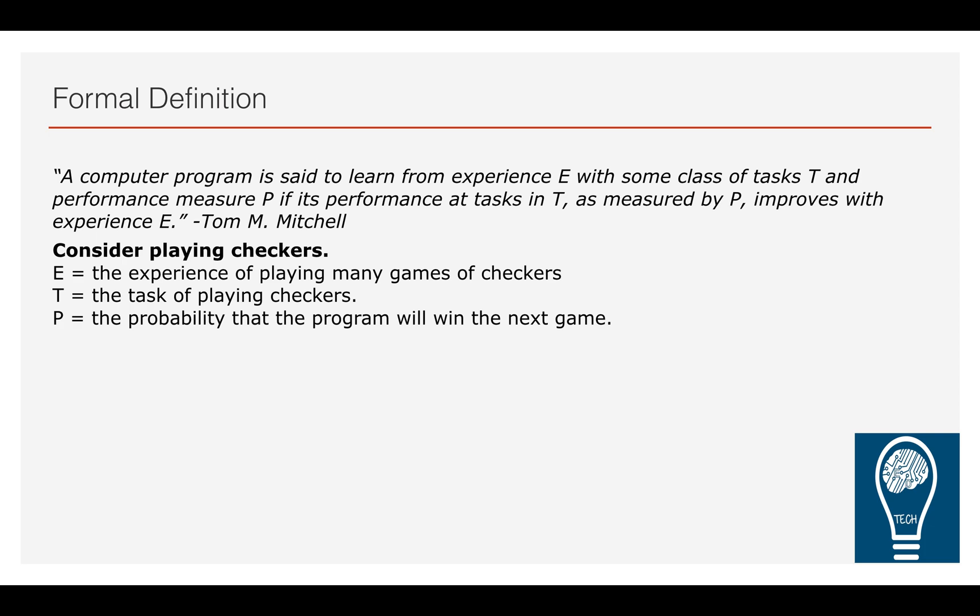If we were to give a formal definition, Tom Mitchell defined a computer program which is said to learn by experience E. It is a mathematical representation of machine learning. We have experience E with some class of task T and a performance measure P. If the performance at task T as measured by P improves with experience, then it is known as machine learning. Basically, over a period of time, if we are adding more and more experience into the task, the performance is bound to improve — that is the whole idea of machine learning algorithms.